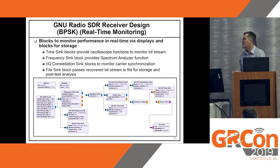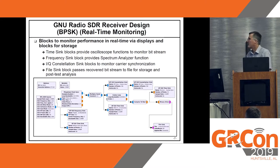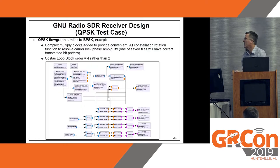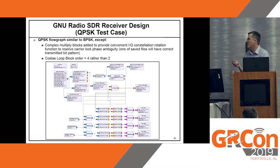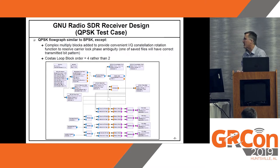The support blocks for real-time monitoring during the tests included the time sync block for oscilloscope functions, a frequency sync block, and an IQ constellation sync block to monitor carrier synchronization and performance. For QPSK, the flow graph was pretty similar — the only difference was the Costas loop order, which is now 4 rather than 2. The multiplier blocks at the bottom were used to resolve carrier lock phase ambiguity.